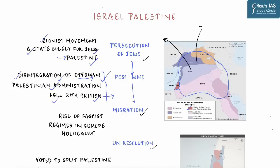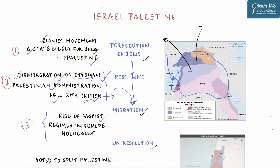As WWI ended and new governments formed in Europe, another major factor boosted Jewish migration to Palestine: the emergence of fascist governments across Europe. One of them was Hitler, another was Mussolini, and there was widespread persecution extending well beyond Germany. As more anti-Jewish fascist governments rose across Europe, the persecution of Jews reached unprecedented levels, not even seen during medieval times, resulting in a scale of Jewish migration never seen before in history.